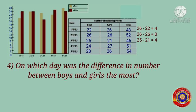On 4th June, the difference is 27 minus 24 = 3. On 5th June, the difference is 28 minus 26 = 2. So the difference in the number of boys and girls is most on two days.